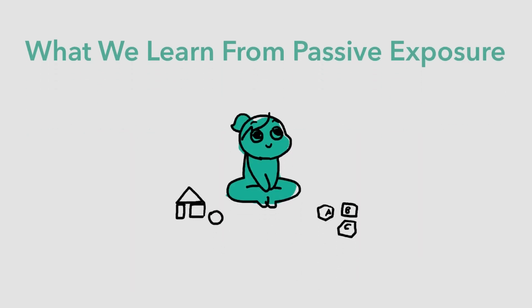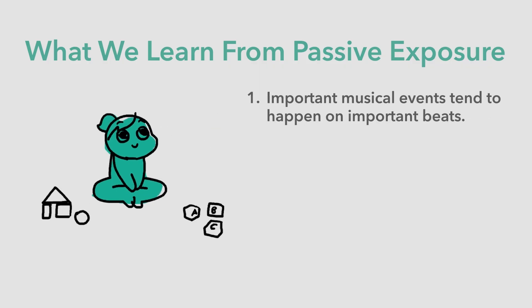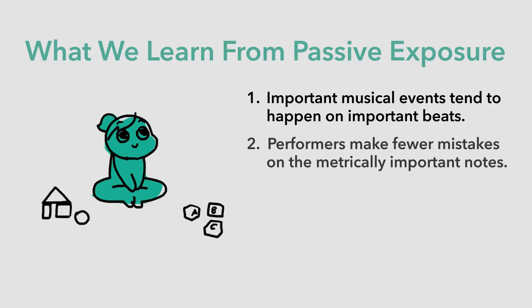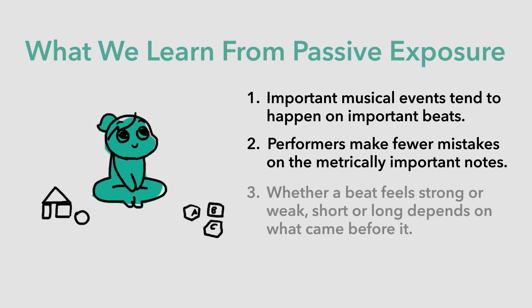From birth, the auditory system begins organizing sounds into familiar and not-so-familiar categories. This is most obvious for speech, but it happens for music too. Infants rapidly learn from statistical regularities what to expect of musical rhythms in their culture. First, important musical events tend to happen on the important beats. Second, musical events occurring on metrically strong beats are more easily recognized, and they're less likely to be confused with events that occur in weaker metrical locations — performers make fewer mistakes on the metrically important notes. Third, just as pitch perception depends on the tonal context, beat perception depends on the metrical context. Whether a snare hit feels strong or weak, short or long, depends on the beats that came before it.